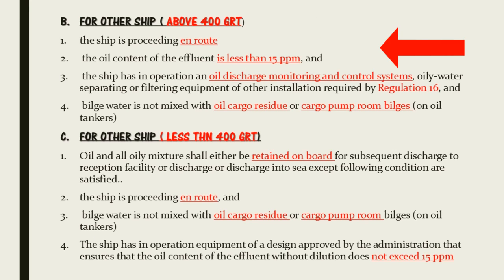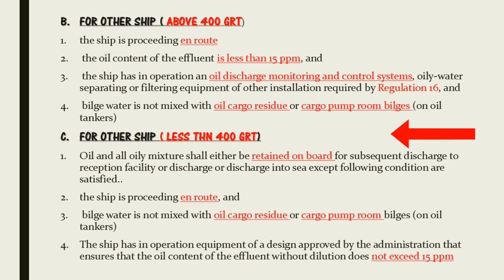For other ships above 400 GRT, discharge of oily bilges is prohibited except when: the ship is en route; the oil content of the fluid is less than 15 ppm; there is an operational oil discharge monitoring and control system; and the bilge water is not mixed with oil cargo residue and oil pump room bilges.